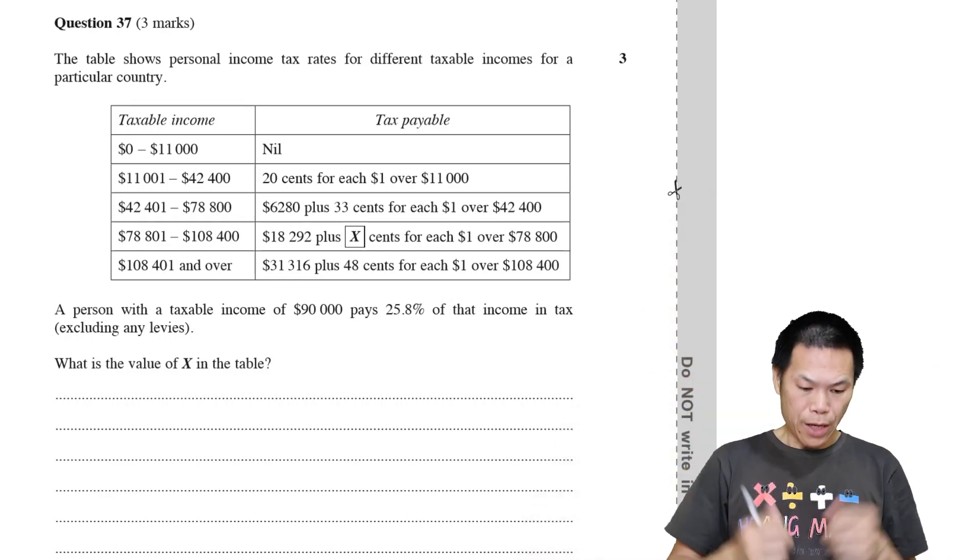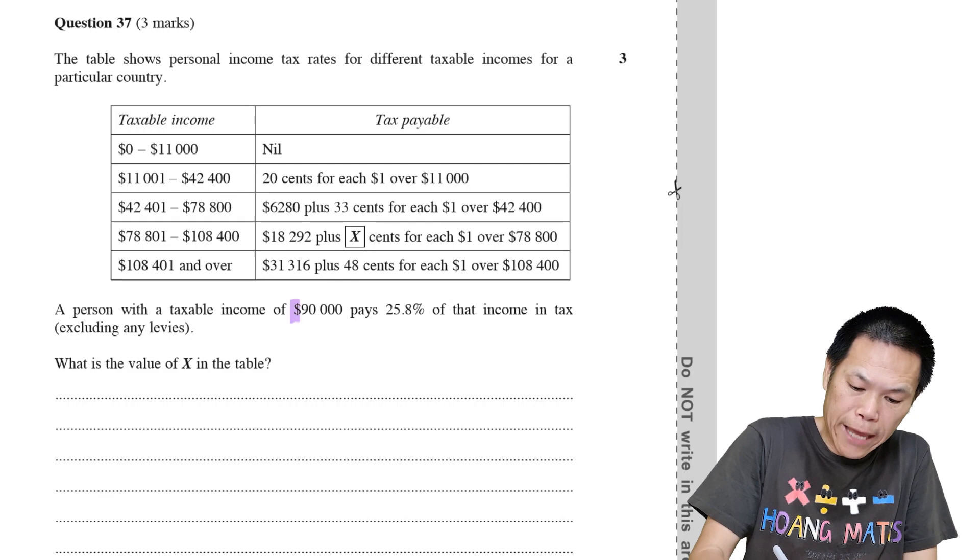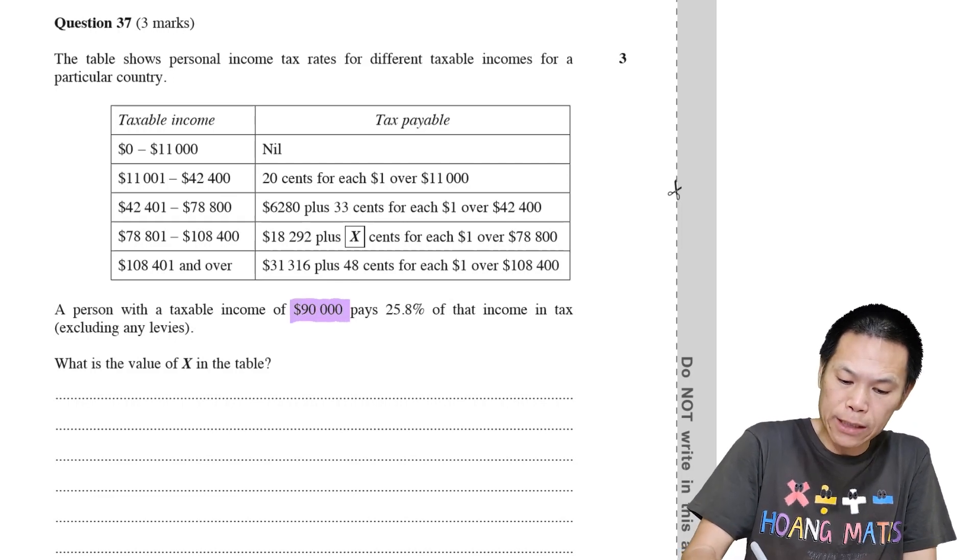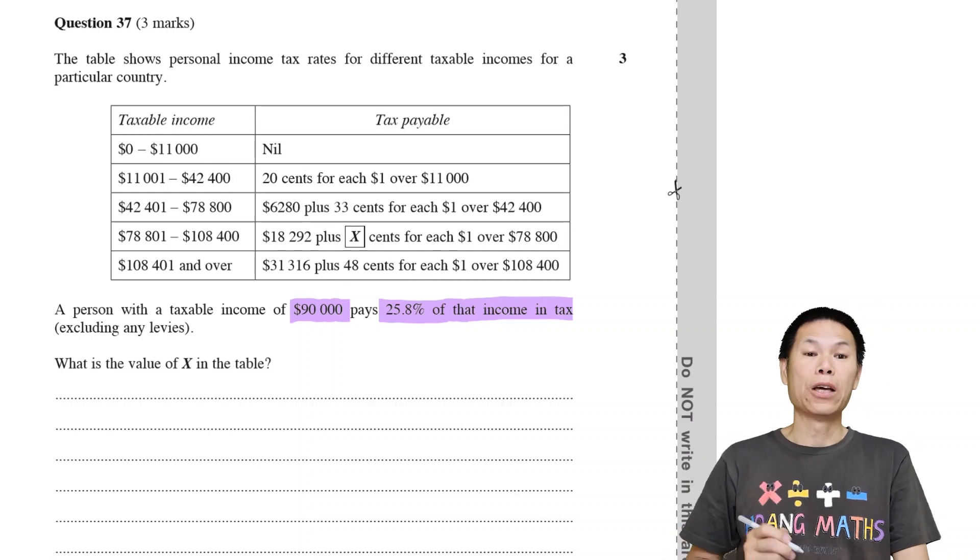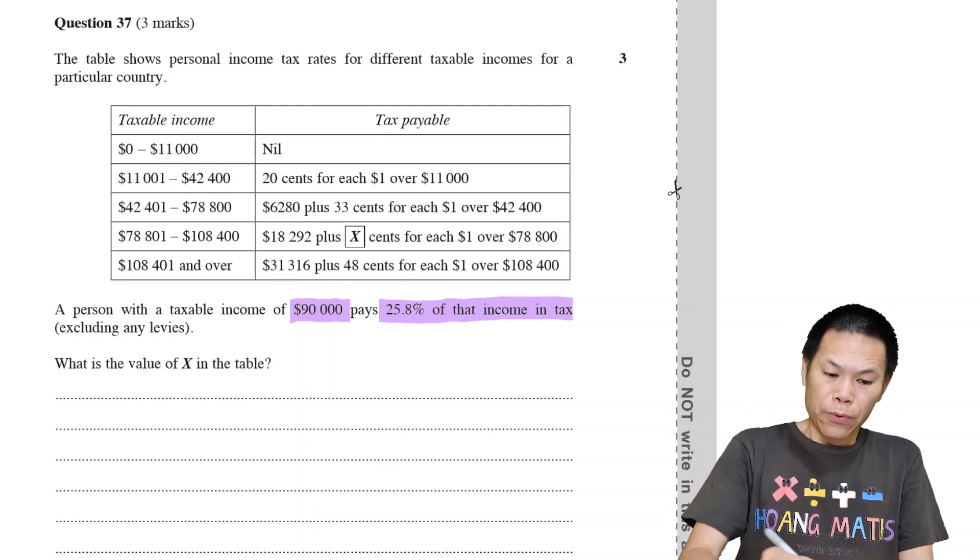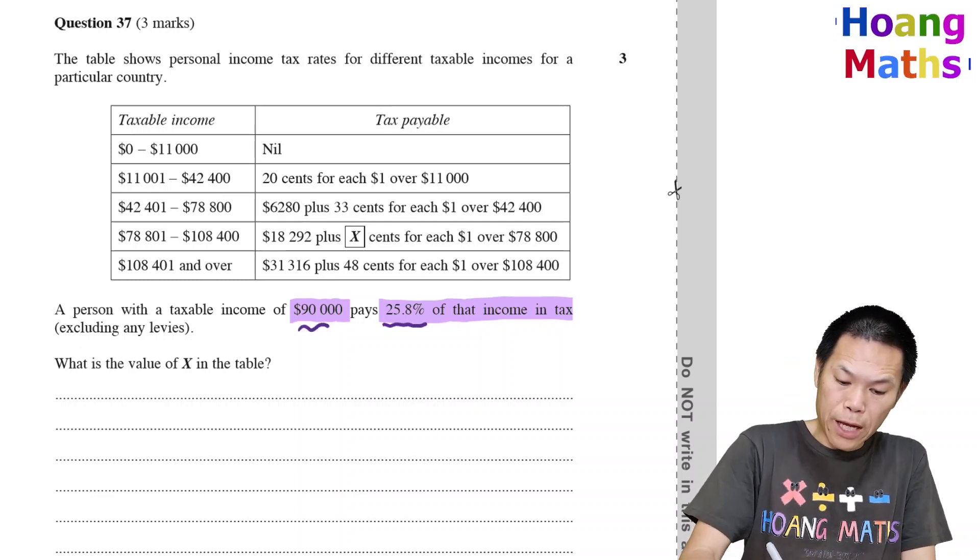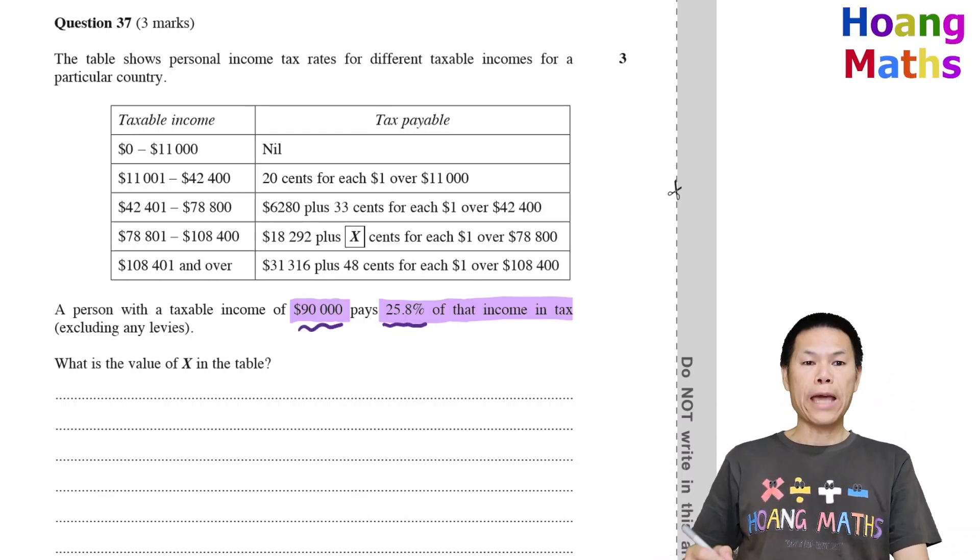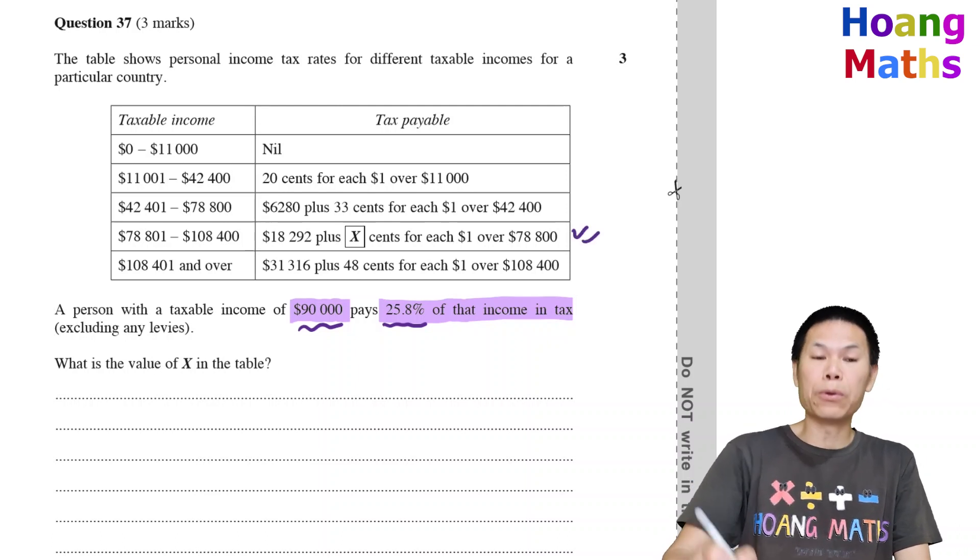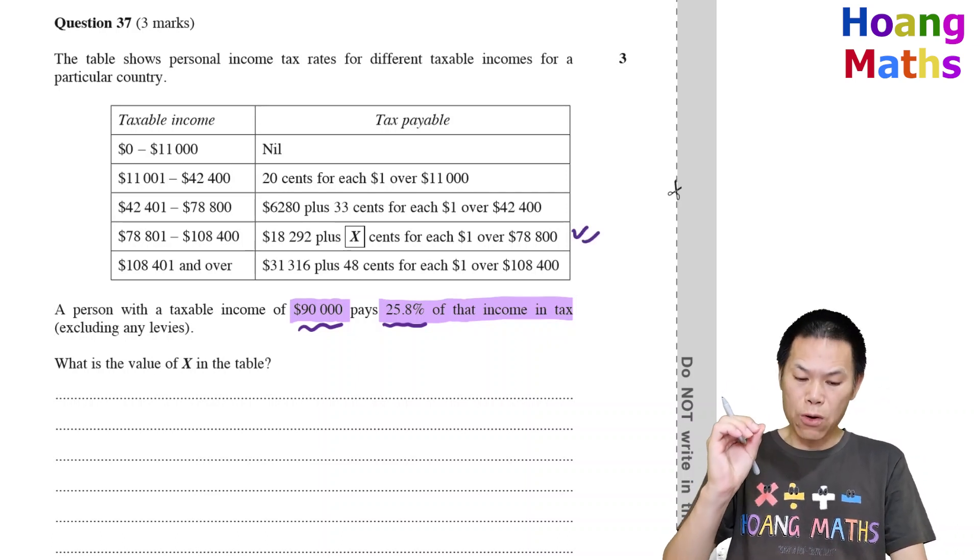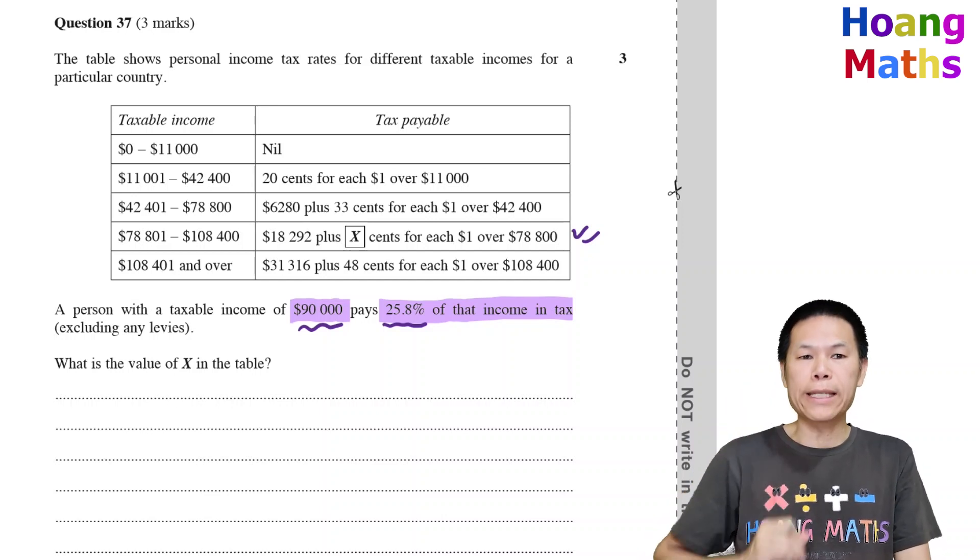Question 37. A person with a taxable income of $90,000 will pay a tax of 28% of that income. In other words, the person has to pay 25.8% of $90,000. This is exactly the same as using this table here. Let me work out 25.8% of $90,000 first.